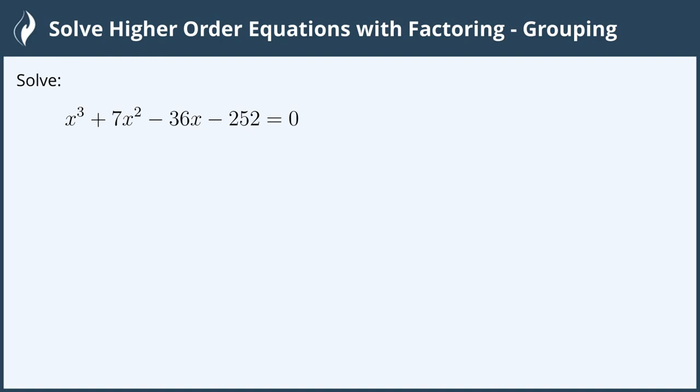Hi everyone! In this video we will solve higher order equations with factoring by grouping. Solve x³ + 7x² - 36x - 252 = 0.